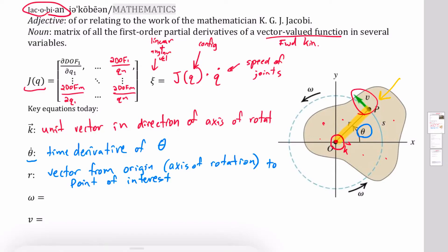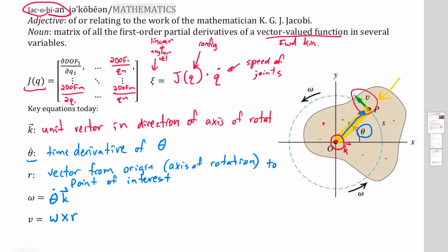Omega is a vector quantity obtained by taking theta-dot and multiplying by k-hat. The instantaneous velocity v equals omega cross r, where r is the vector from the origin. Since omega is coming out of the page we can write this as theta-dot times k-hat cross r.